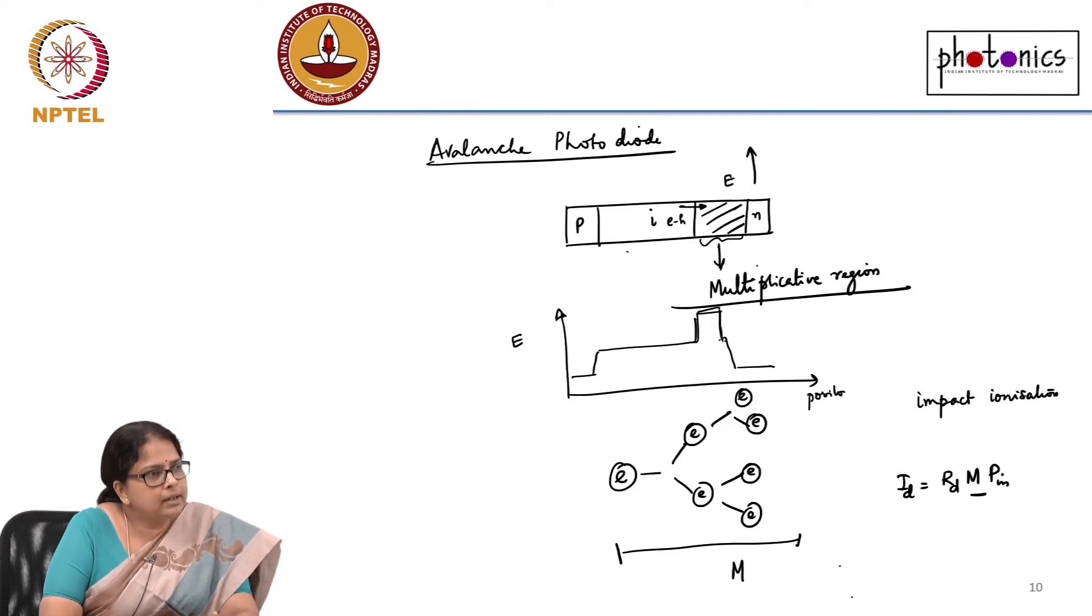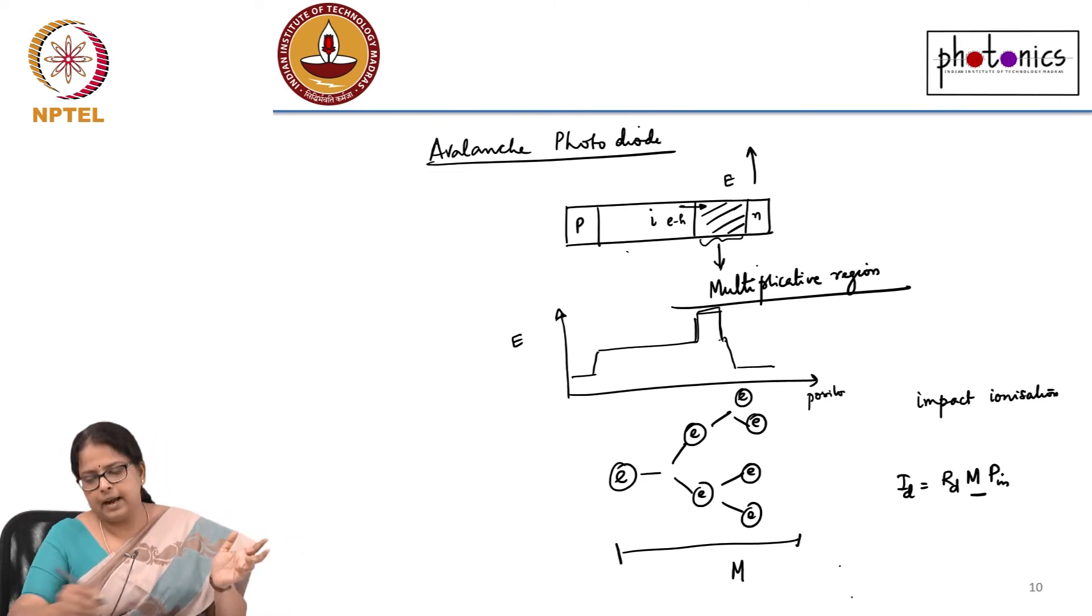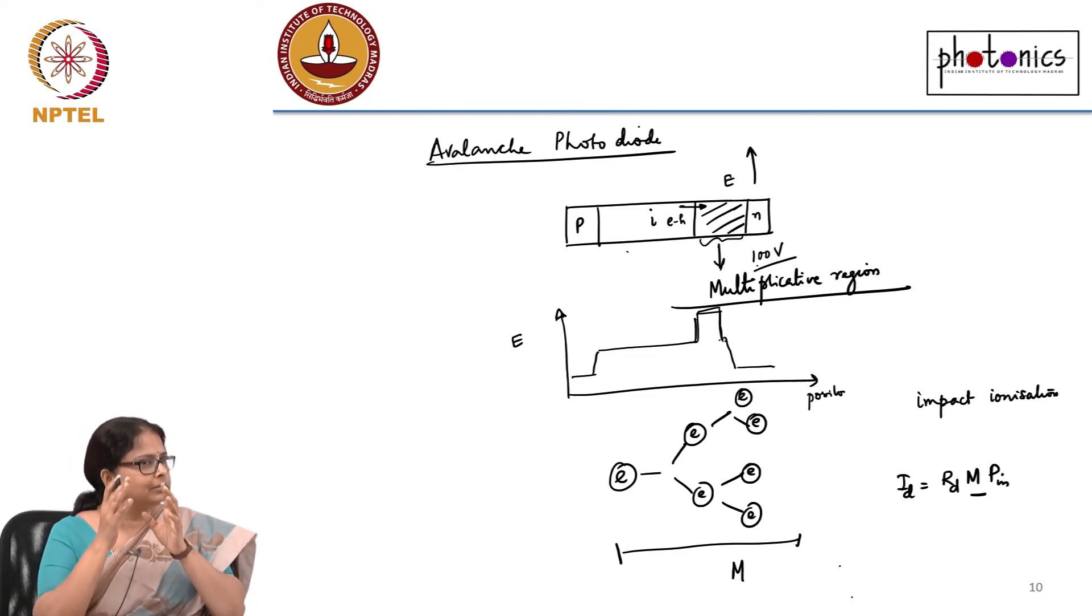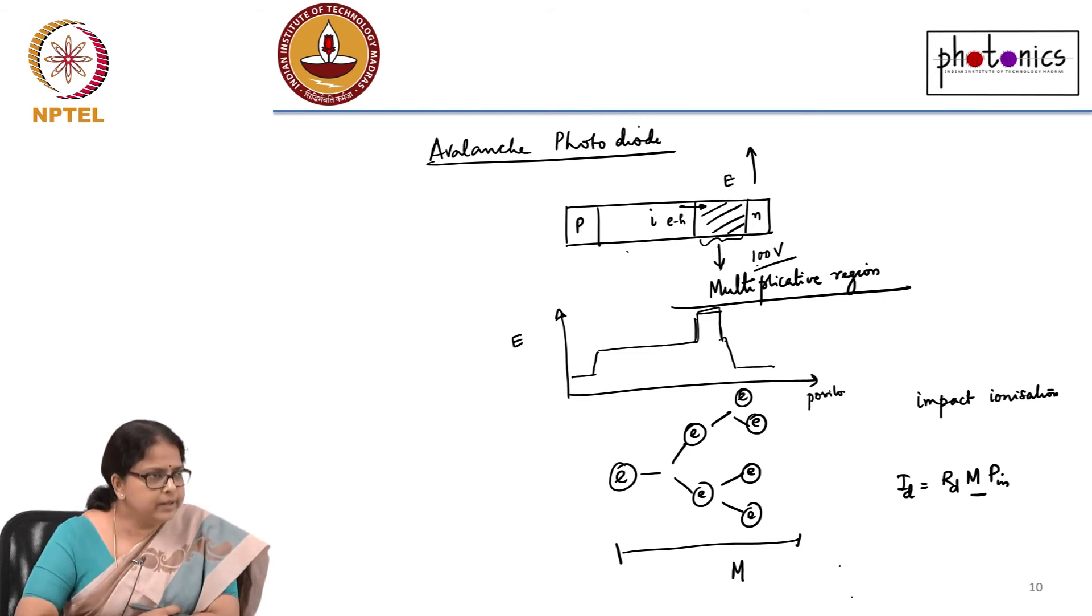What is additionally required? Of course you need that specific doping to be done. A specific device to be fabricated such that you can apply hundreds of volts, hundred volts is a typical reverse voltage you apply and still it should not undergo a breakdown. That is why the doping has to be high so that it does not undergo a breakdown. Once you do that and if you want to have a multiplication factor, you would apply this very large avalanche or if you want to kick in the avalanche effect.